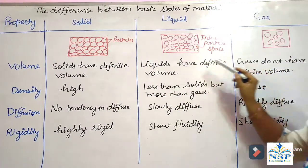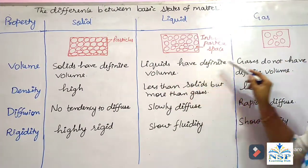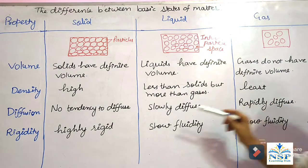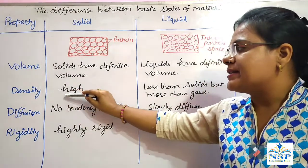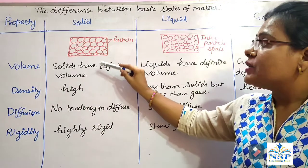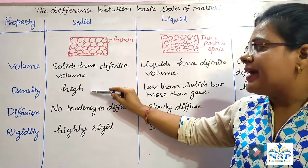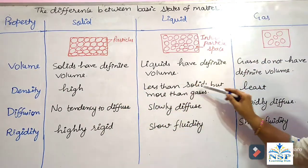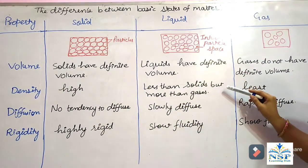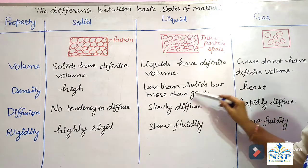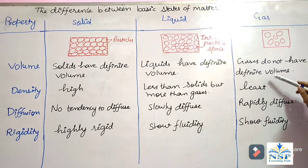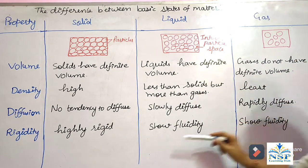Volume. Solids have definite volume. Liquids also have definite volume. But gases do not have definite volume. Density — solids have high density. Liquids have less density than solids but more than gases. In gases, density is least.